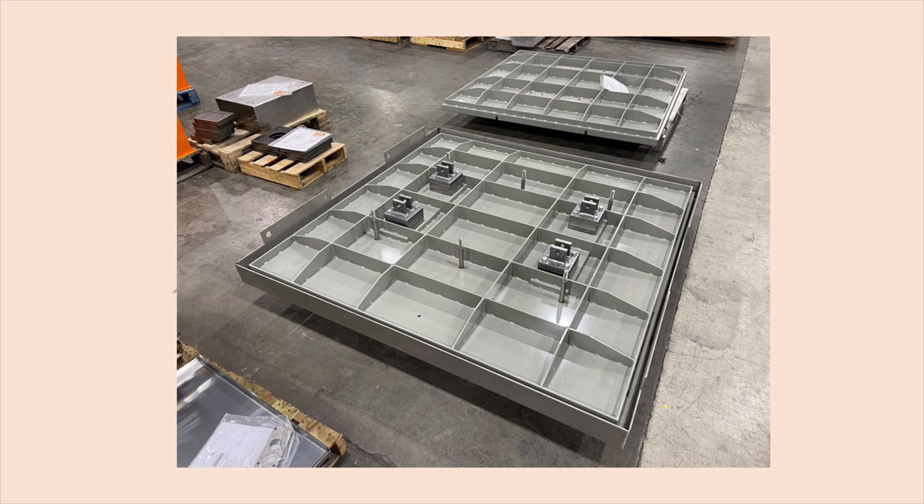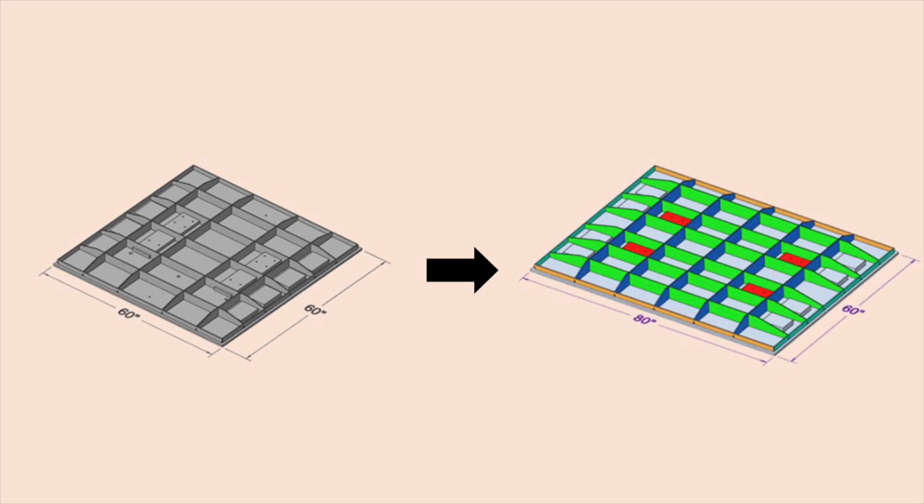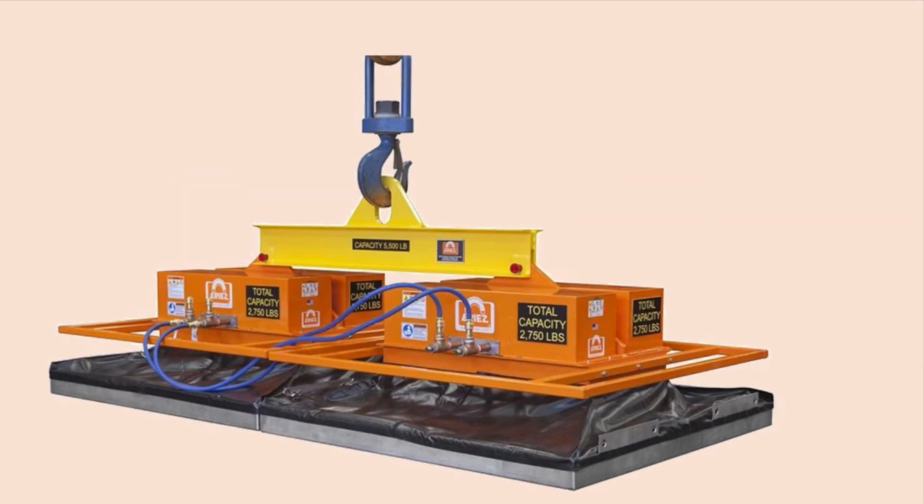The main goal of the project as tasked by Eriez was to increase the size of the back bar and grid assembly to increase the device's size and weight capacity. Eriez desired an increase from their 60 by 60 unit to a 60 by 80 unit. These units are typically joined together to create a larger machine as shown here.